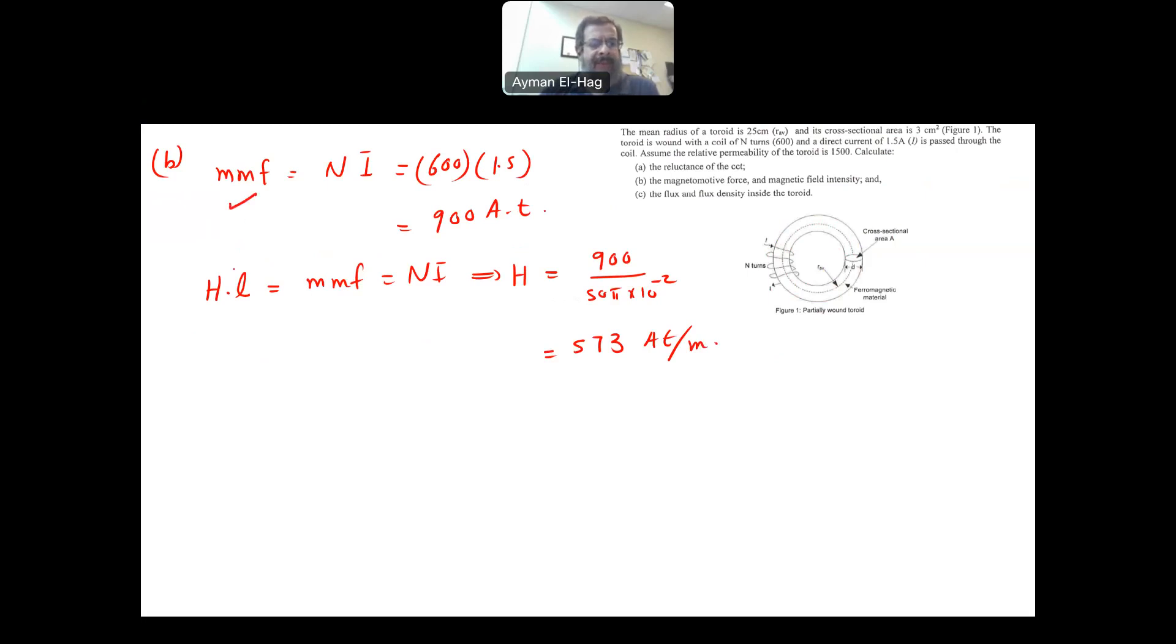And this will give me 573 ampere turn per meter. This is your H. So we found the MMF and we found H. The last thing is to find the flux and the flux density. We said that MMF is equal to the flux times the reluctance. We have both.